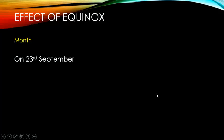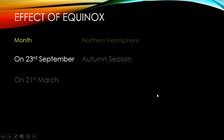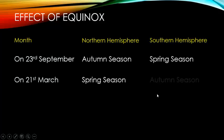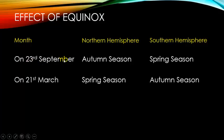Effects of Equinox: On 23rd September, the Northern Hemisphere experiences Autumn season and the Southern Hemisphere experiences Spring season. On 21st March, the Northern Hemisphere experiences Spring season and the Southern Hemisphere experiences Autumn season.